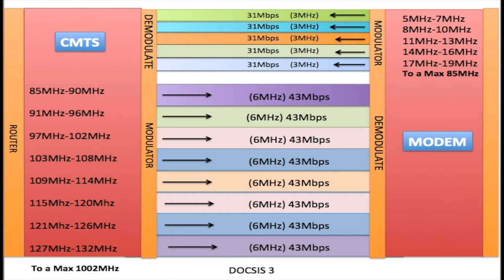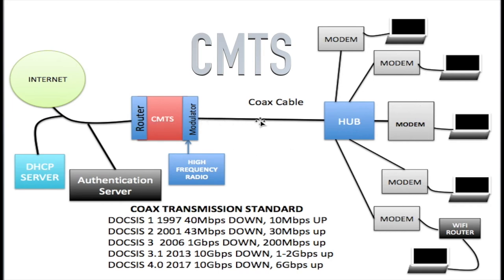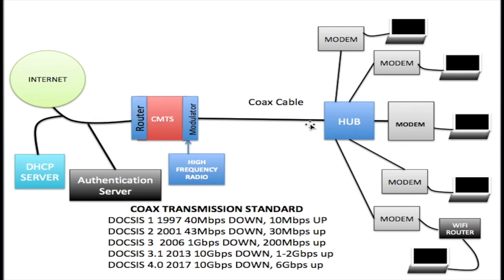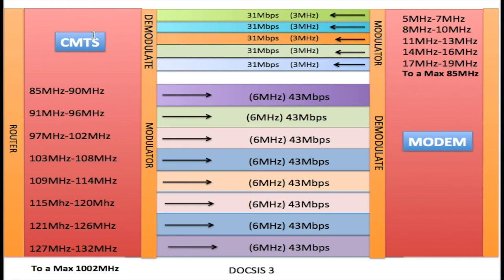Now let's talk about how data travels from the internet through the CMTS across the coaxial cable to the modem. This is data for all customers — a shared medium. The data comes in from the internet through the router interface of the CMTS, then goes through to the modulator side. Frequencies between 85 MHz and 1,002 MHz are used to transmit this digital data across the coaxial cable.